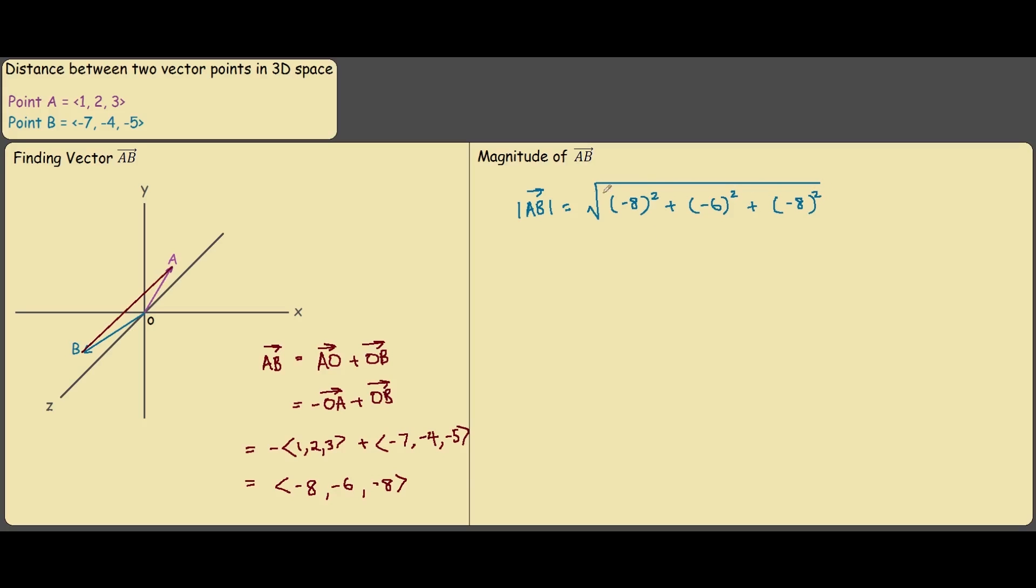And when you put this into your calculator you should get 12.8 units as your distance. And that is how you find the distance between two vector points in 3D space.